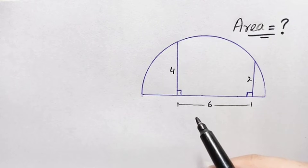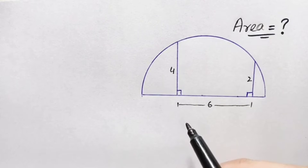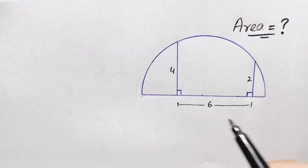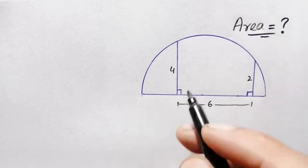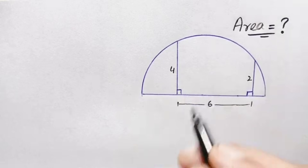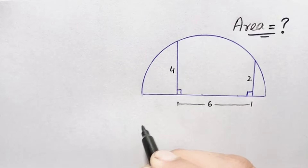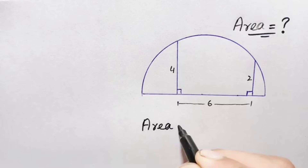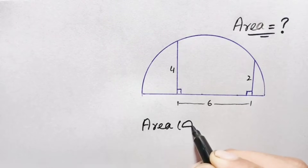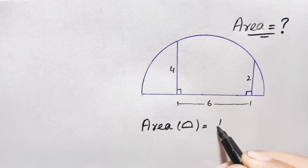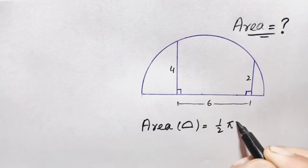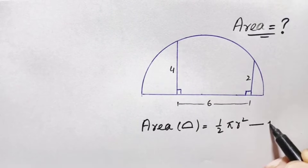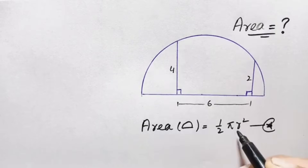As we know, the area of a circle is πr², so the area of this semicircle will be half of πr². We will write the formula to find the area of this semicircle: area of a semicircle is ½πr². Let us suppose this is our equation number star.